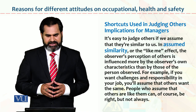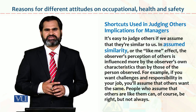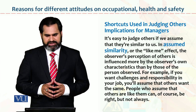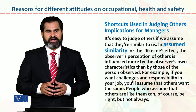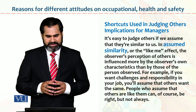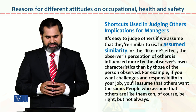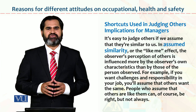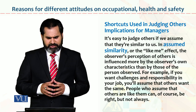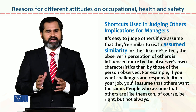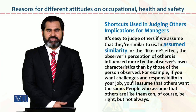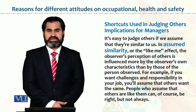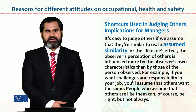Shortcuts used in judging others — implications for our managers. Sometimes problems arise. We try to judge people in just 10–20 minutes — that is not right. You can judge people to some percentage but not 100%. In assumed similarity — 'are they like me?' — the observer's perceptions of others are influenced more by the observer's own characteristics than by those of the person observed. For example, if you want challenges and responsibility in your job, you will assume others want the same. But you cannot say that he is just like me.